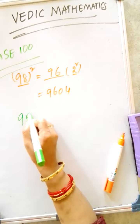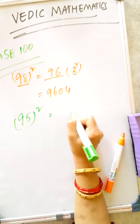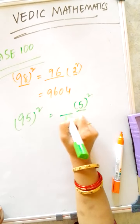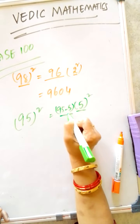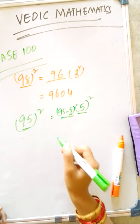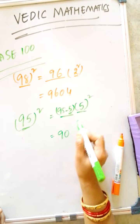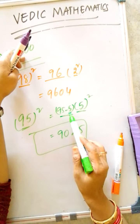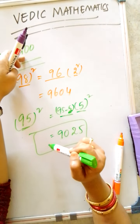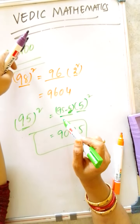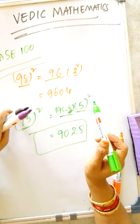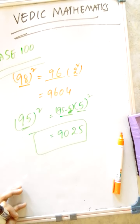Next one, 95 square. How much it is lesser from 100? 5 square, we have to write — 25. What we have to reduce? 95 minus 5. We have to reduce 5 from the given number. The answer is 9025. In previous base 50, we are reducing the value from 25. But in this case, we are reducing from the given number itself. We have to observe the difference between base 50 and base 100.